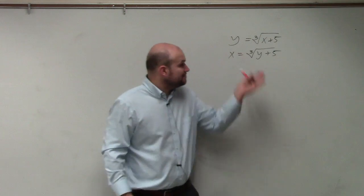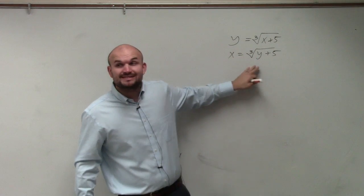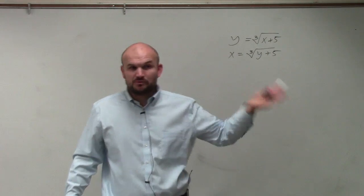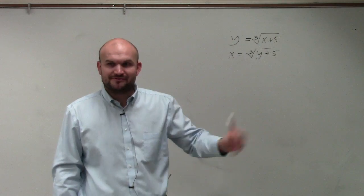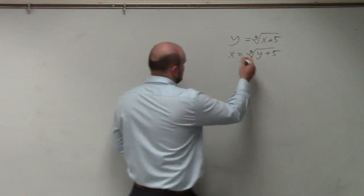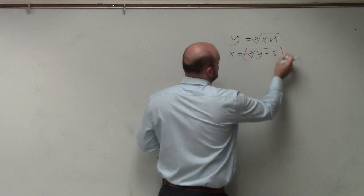Now we just need to solve for y. But you can see the y is under cube root. So I need to eliminate the cube root. When we eliminate the square root, we square it. So to eliminate the cube root, we'd have to cube it. So we'll just cube both sides.